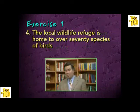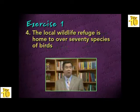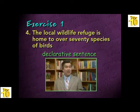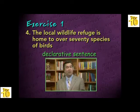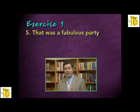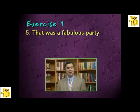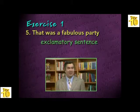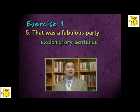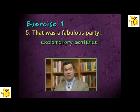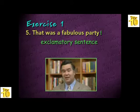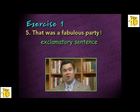The next example: 'The local wildlife refuge is home to over 70 species of birds.' This sentence states a fact — therefore it's a declarative sentence, the most common type in English, and it ought to be concluded with a simple period. The final sentence: 'That was a fabulous party!' Here is a sentence that expresses strong emotion. This is an exclamatory sentence and it ought to be marked with an exclamation point, indicating that strong feelings are being expressed.